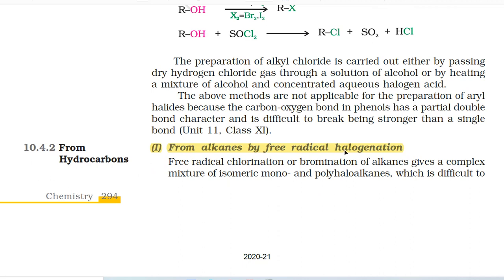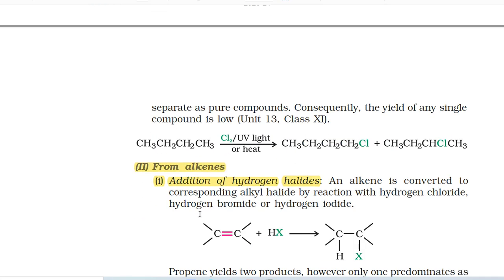10.4.2 From Hydrocarbons. First, from alkanes by free radical halogenation: Free radical chlorination or bromination of alkanes gives a complex mixture of isomeric mono and polyhaloalkanes which is difficult to separate as pure compounds. Consequently, the yield of any single compound is low. For example: CH3CH2CH2CH2CH3 + Cl2 (UV light or heat) → CH3CH2CH2CH2CH2Cl + other isomers.